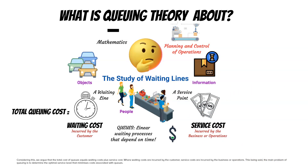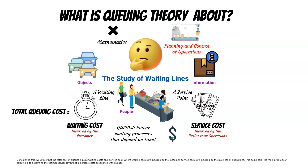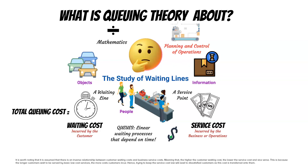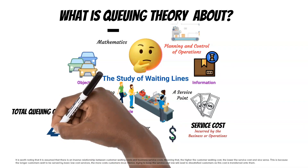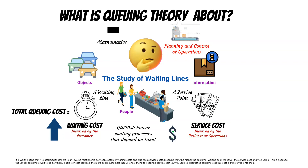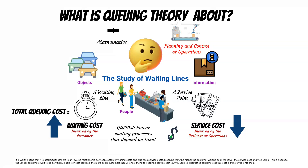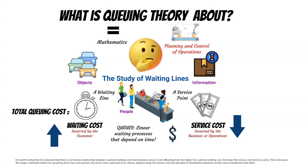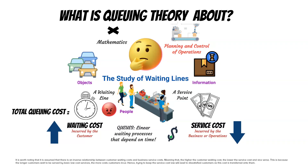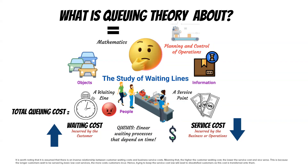The main problem of queuing is to determine the optimal service level that minimizes costs associated with queues. It is worth noting that there is an assumed inverse relationship between customer waiting costs and business service costs, meaning that the higher the customer waiting cost, the lower the service cost and vice versa. This is because the longer customers wait to be served by basic low-cost services, the more costs customers incur. Hence, trying to keep the service cost low will lead to dissatisfied customers as this cost is transferred onto them.